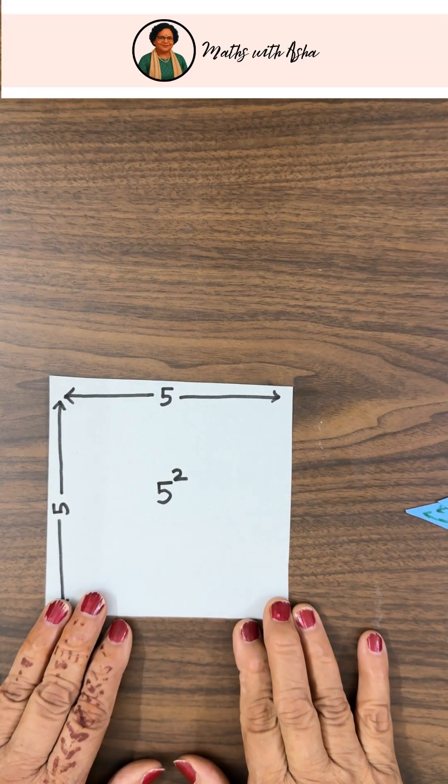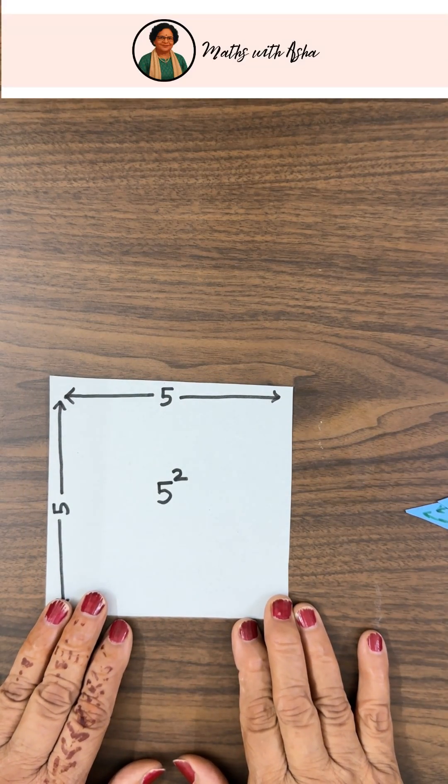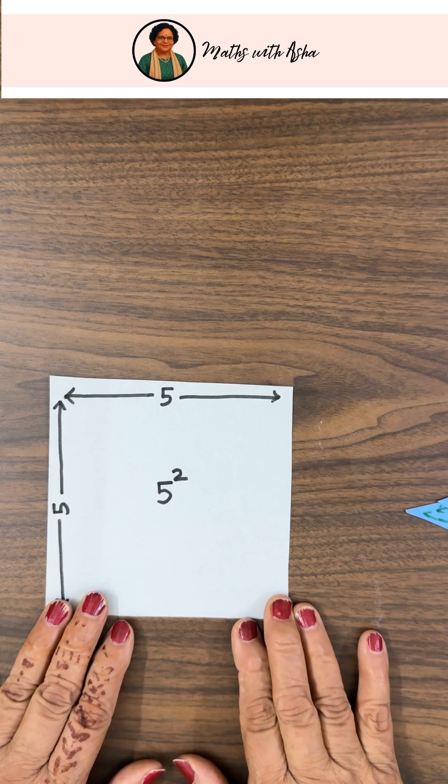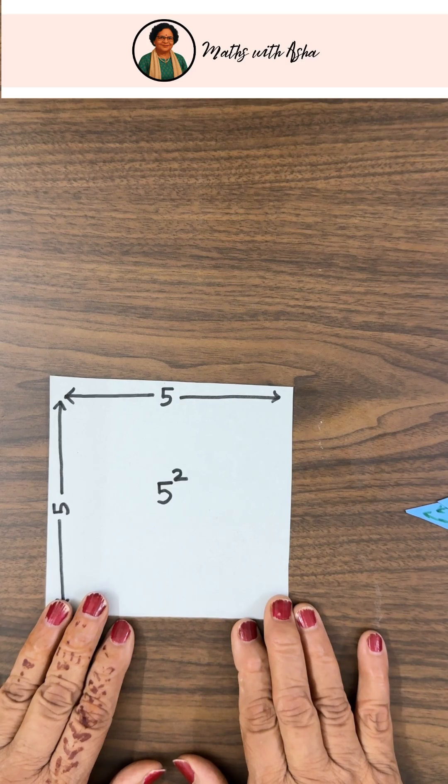Today, we are going to give a very elegant proof of the Pythagoras theorem. This proof was given by the Indian mathematician Bhaskara II, also known as Bhaskracharya. He lived in the 12th century.